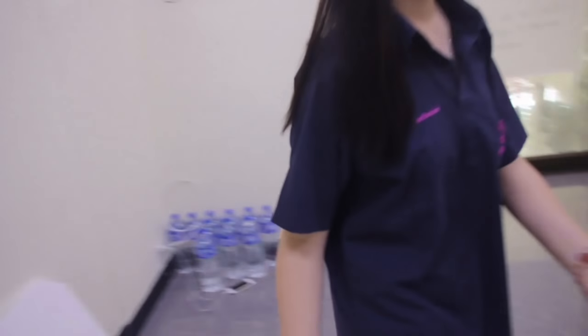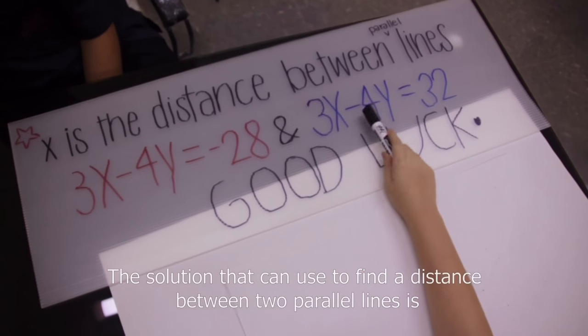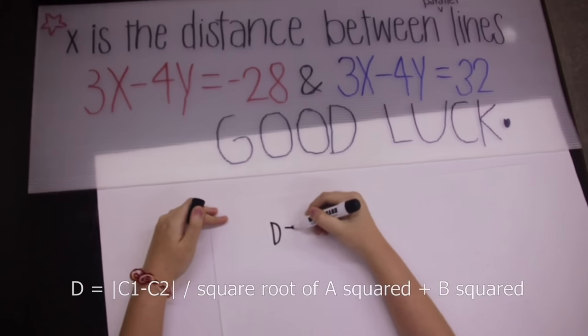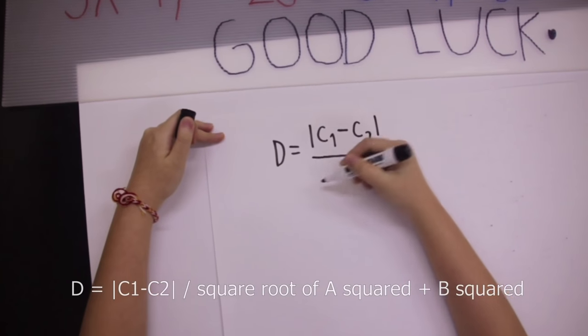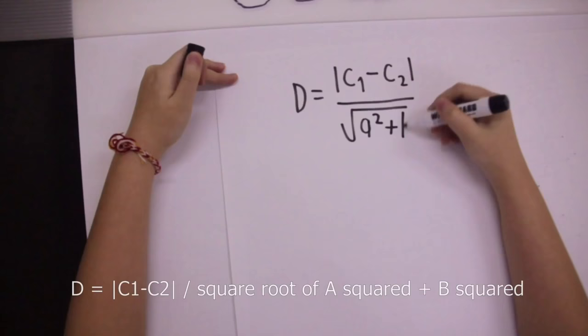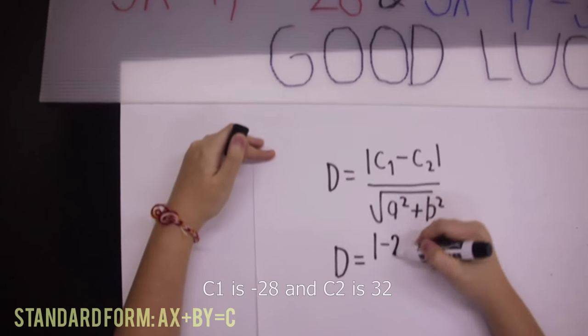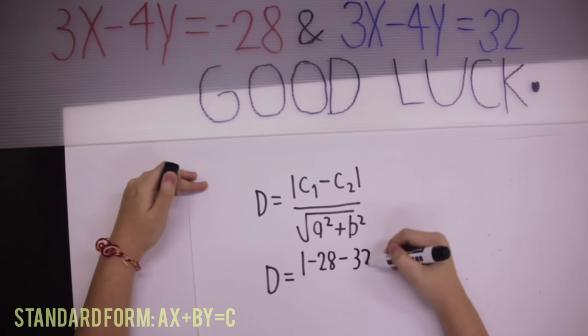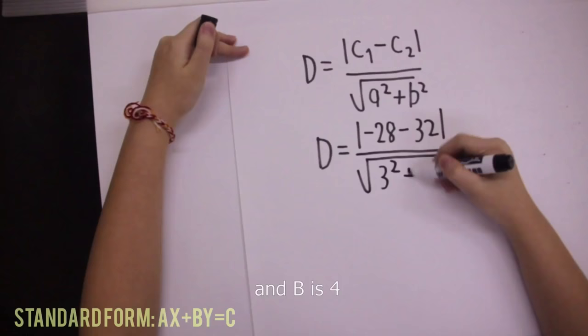What is x? I know how to solve this. The solution can find that the distance between two parallel lines is: d equals absolute value of c1 minus c2, over square root of a squared plus b squared. c1 is negative 28 and c2 is 32. a is 3 and b is 4.